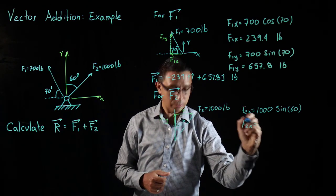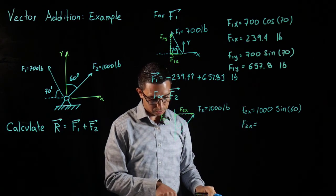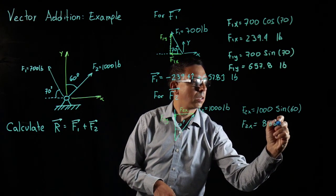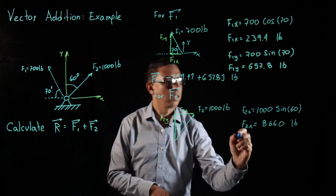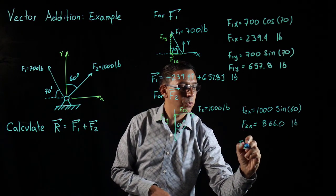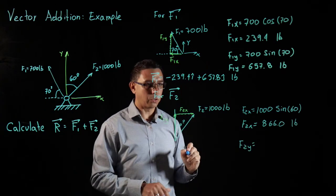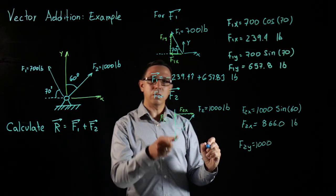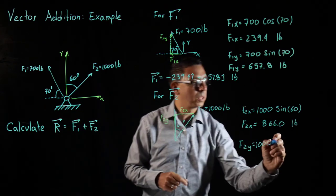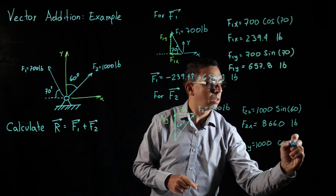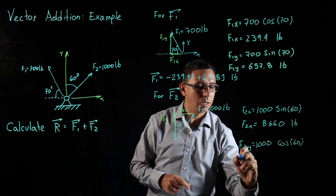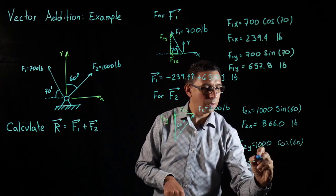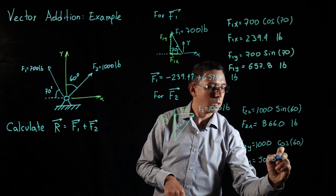and doing those calculations I get 866.0 pounds. And my F2Y is going to be 1000. In this case I'm looking at the adjacent to that angle so that will be cosine of 60, and so F2Y will be equal to 500 pounds.